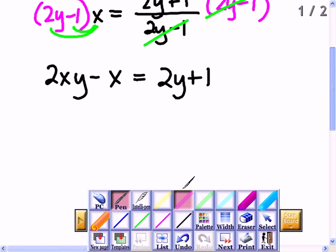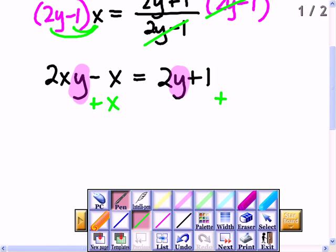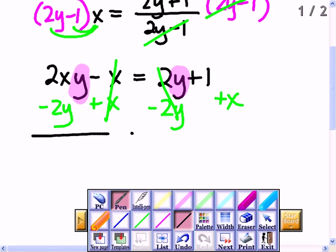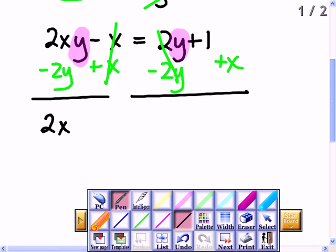Then in order to get the y's together, I need to have any term with a y in it together. I'm going to bring them to the left side, and any term that doesn't have a y in it, I'm going to take to the right side. So I'll add an x to both sides to get rid of this, and I will subtract a 2y from both sides to get rid of this. So now I have 2xy minus 2y is equal to x plus 1.